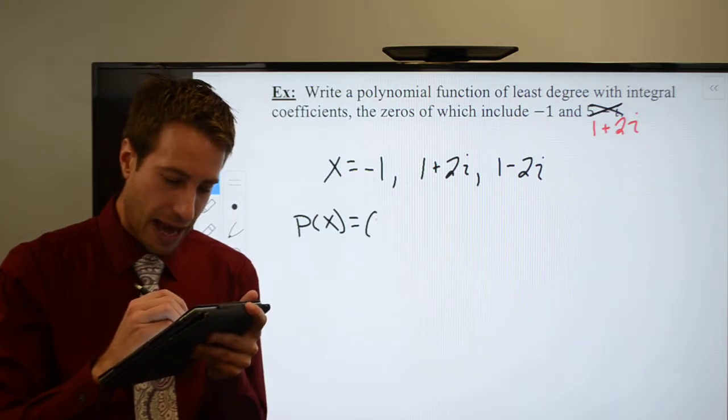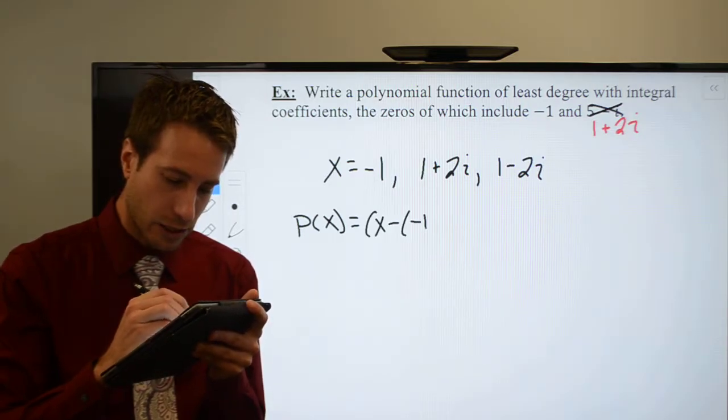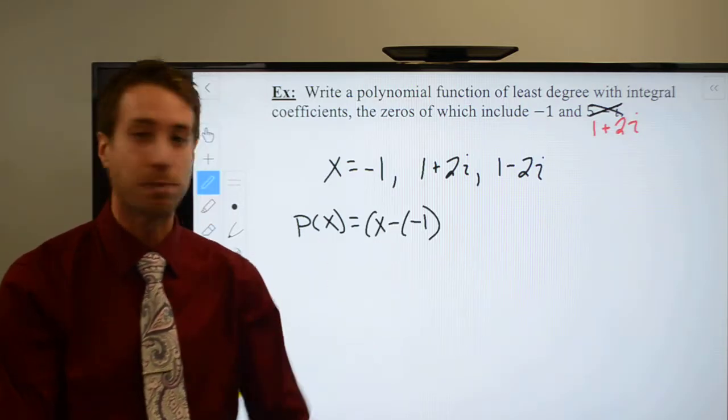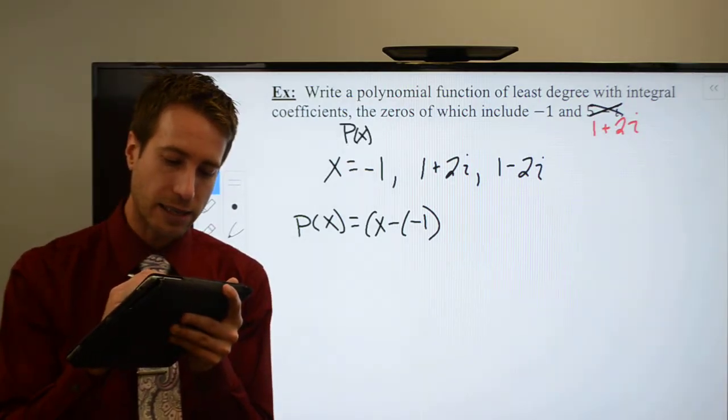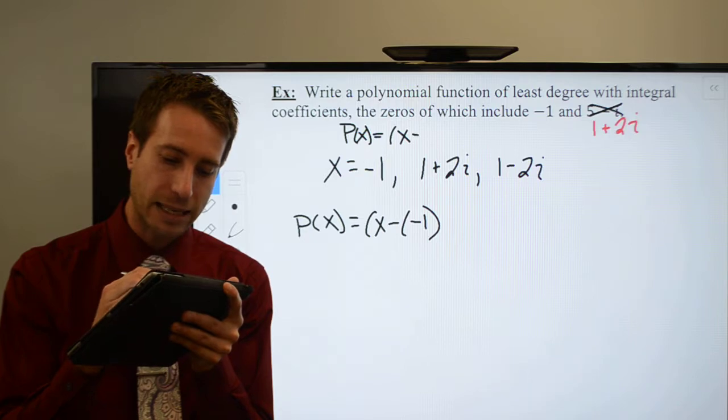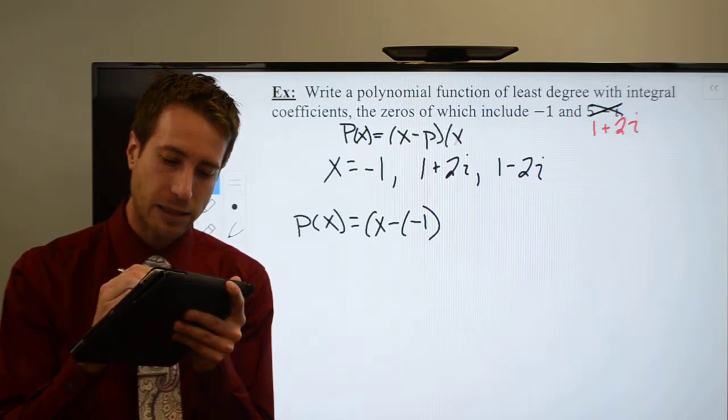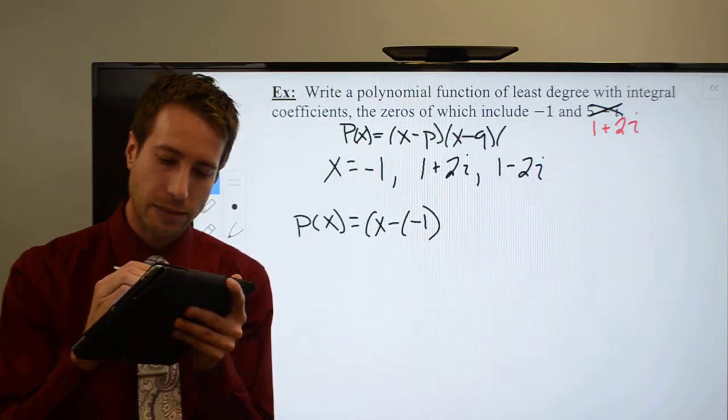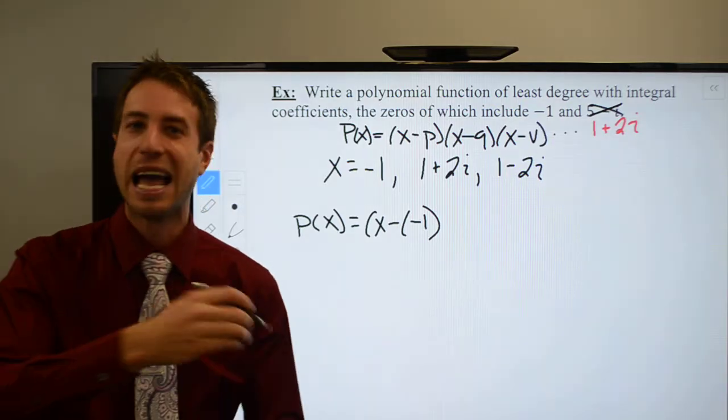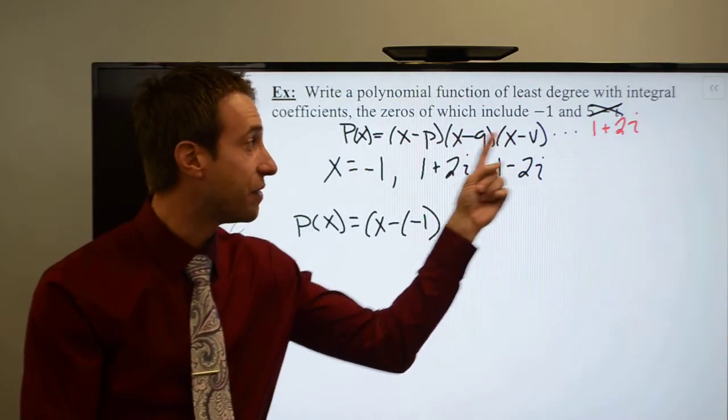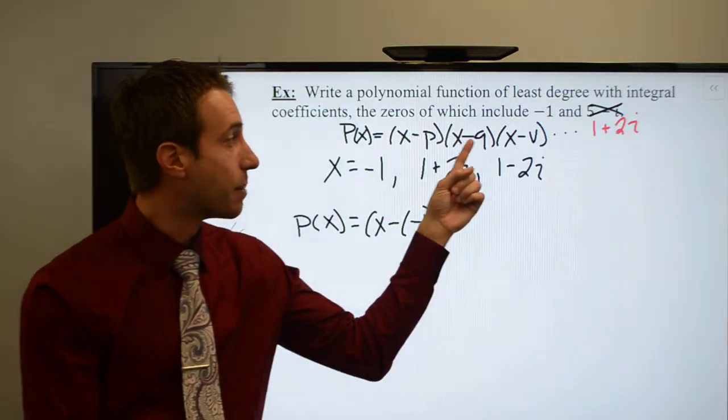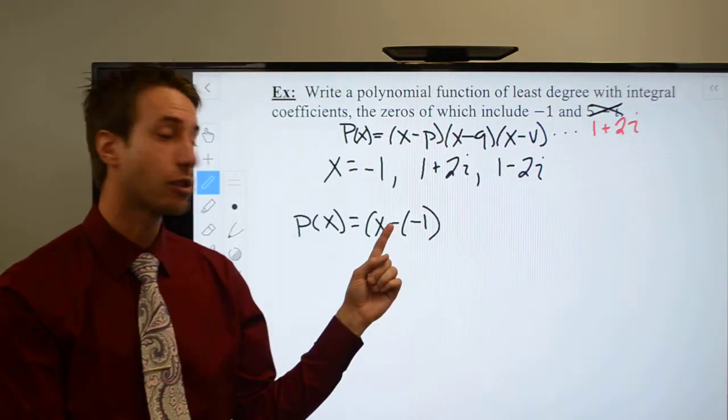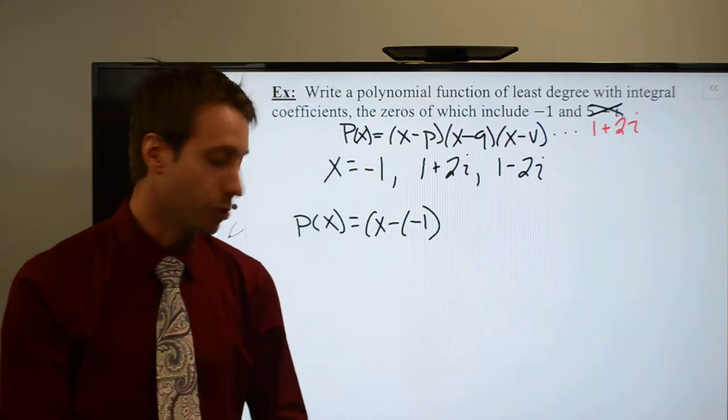We're going to have x minus negative 1. Remember, that minus sign is part of the formula. The equation you're using is p of x equals x minus p times x minus q times x minus v, however many of these you need depending on the number of zeros you have. But recognize the minus sign is already in there. So please don't lose that minus sign. You need it.